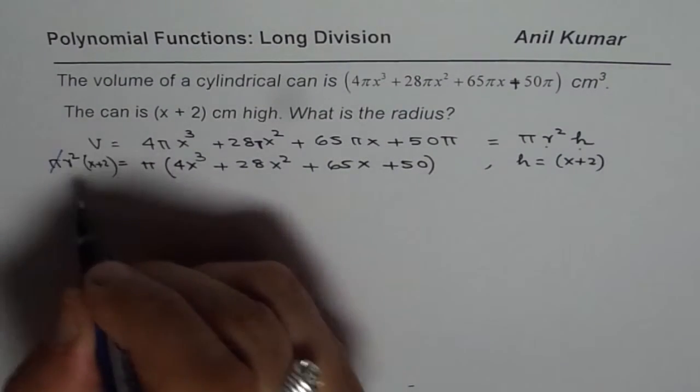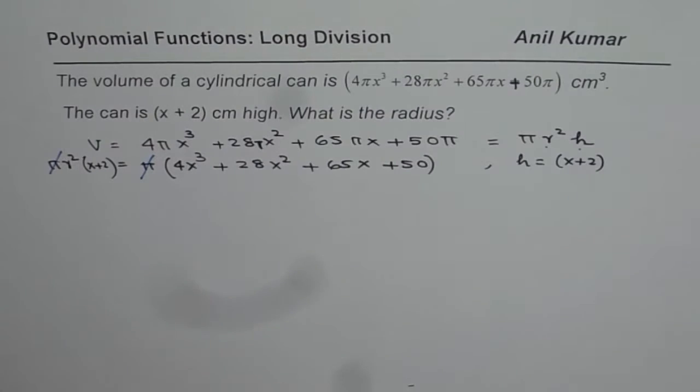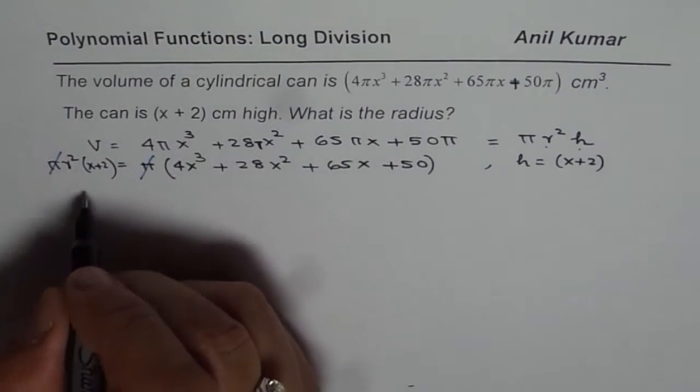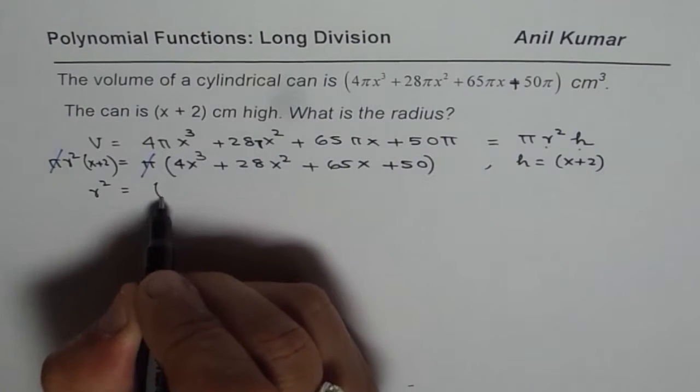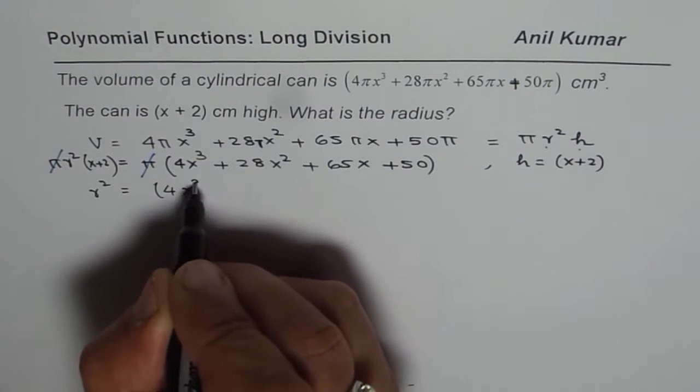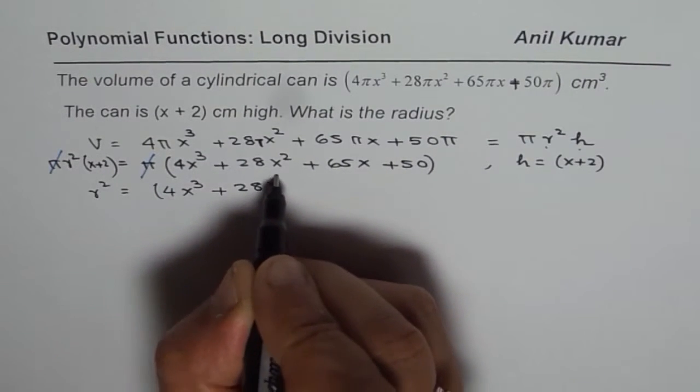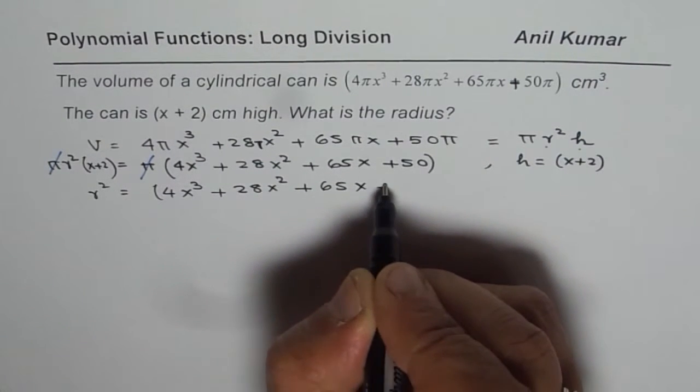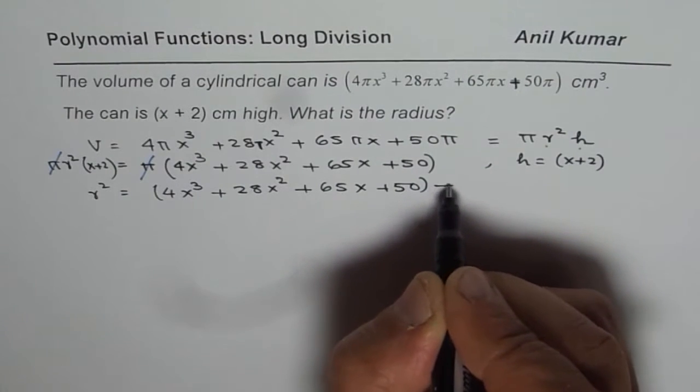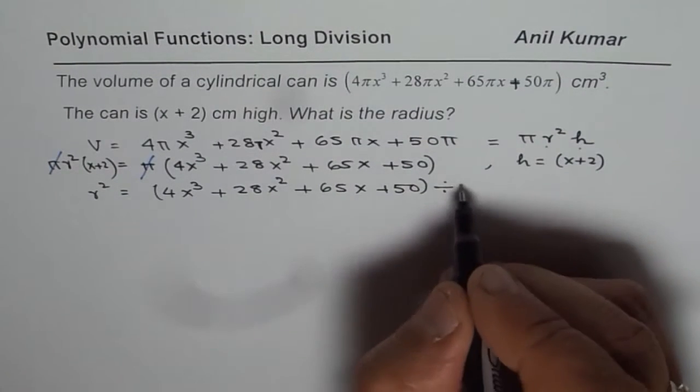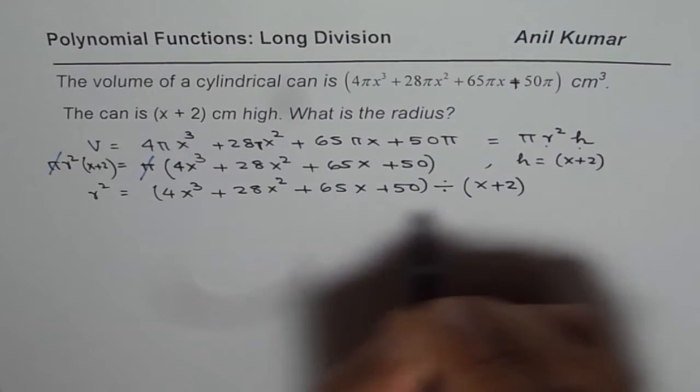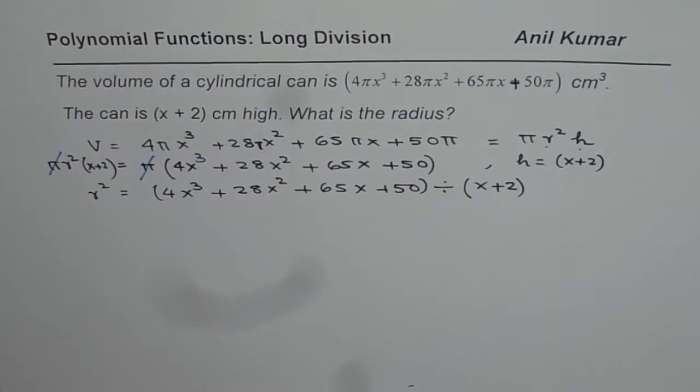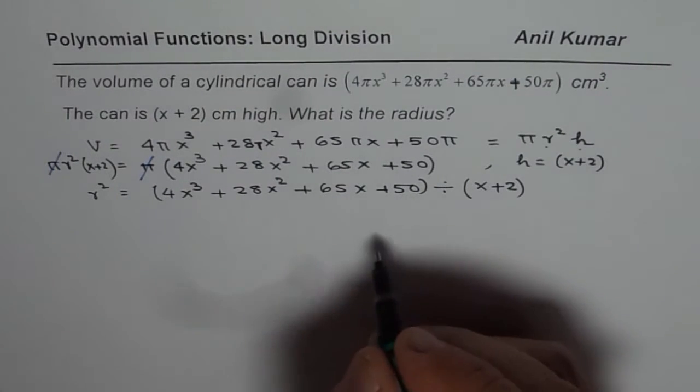For the time being, we can simplify by canceling π and clearly r² can be written as (4x³ + 28x² + 65x + 50) divided by (x + 2), which is the height. So when we divide, we get square of radius. Now, let us do long division and find this square of radius.